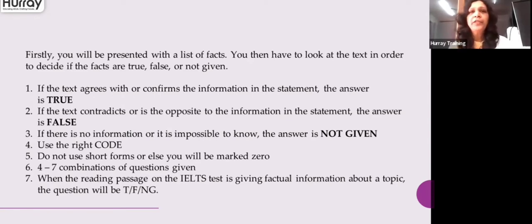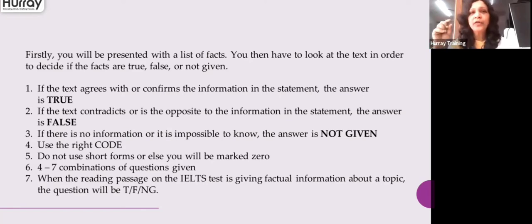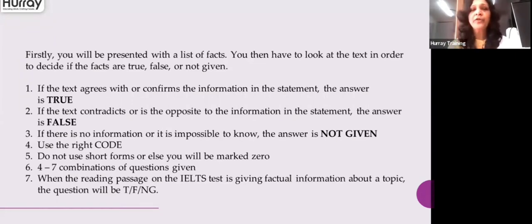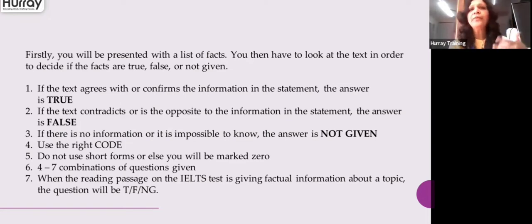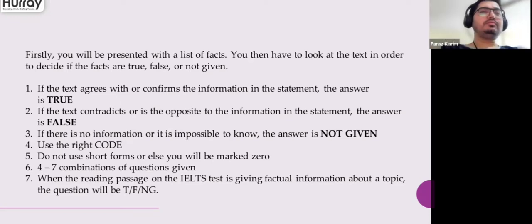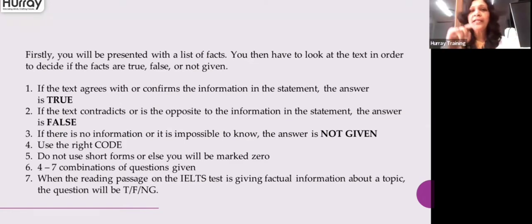You must make sure that you do not match only some words of the question with the text — this is called spot matching. If you find a word or phrase from the question sentence somewhere in the passage, you should not immediately mark it true or false, because that may be a distractor. The answer may come from a different paragraph. You need to relate to the meaning of the entire sentence and find three or four matching facts before marking true, false, or not given.